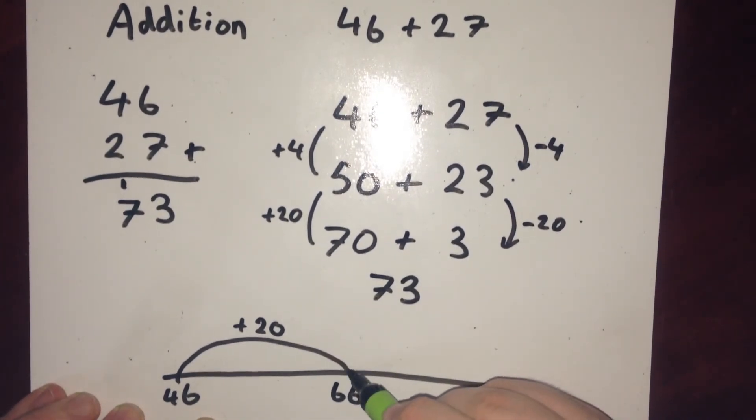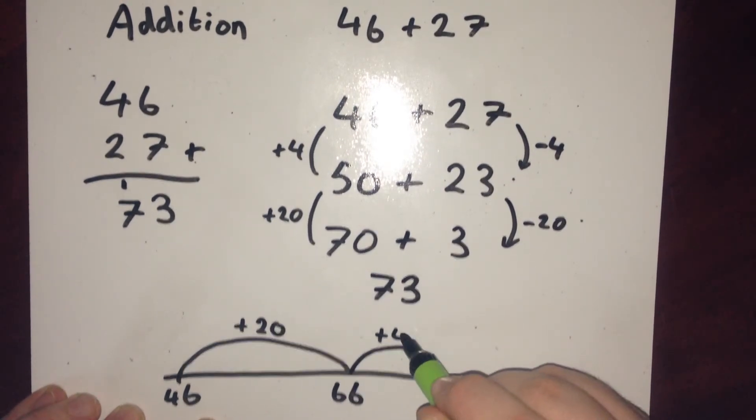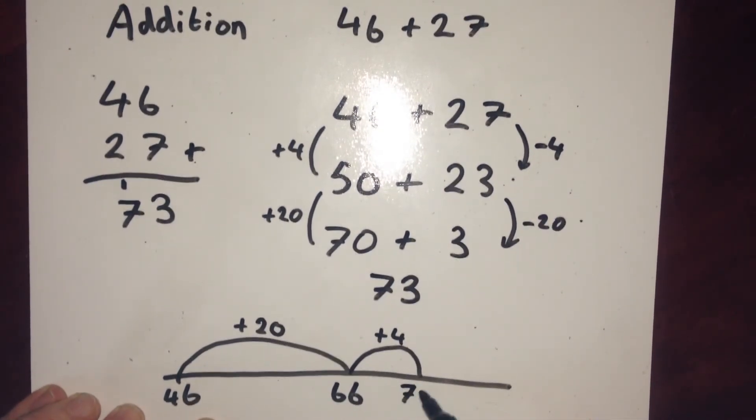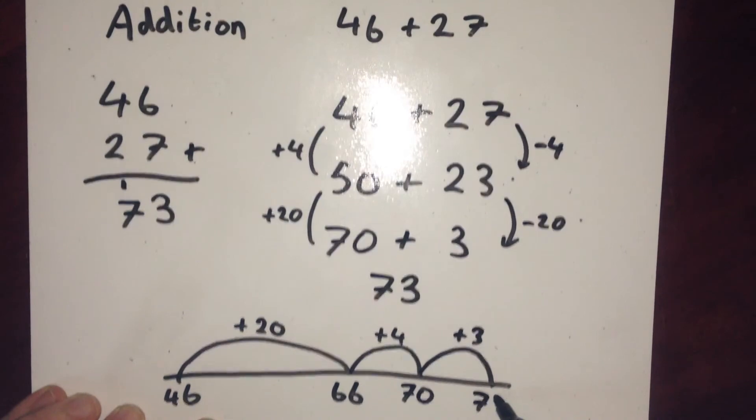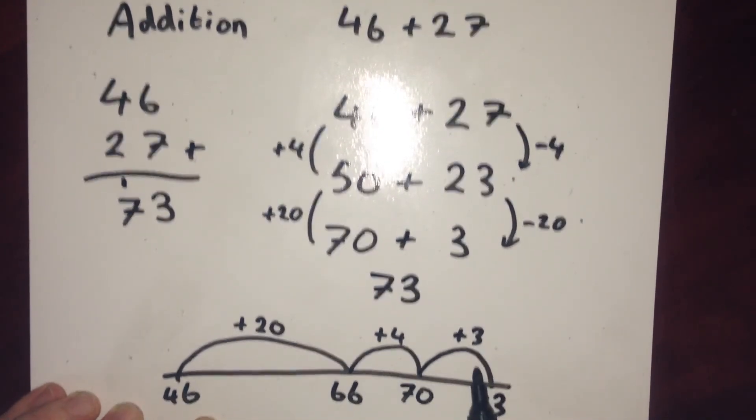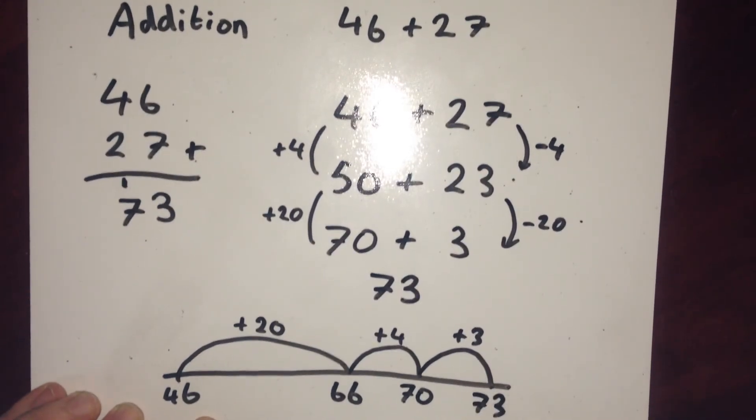I'm going to split that jump of 7 into a jump of 4 to take us to a nice round 70, and a jump of 3 to take us to 73. So in total our jumps have been 20, 4 and 3. That makes our 27. So 46 add the 27 is 73.